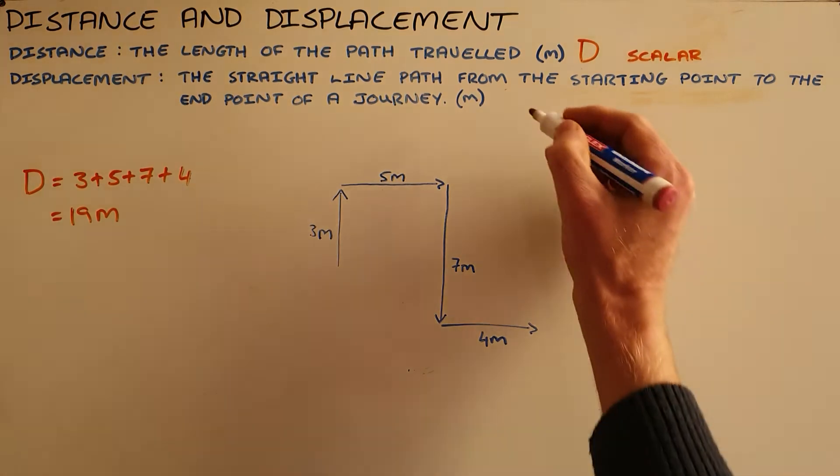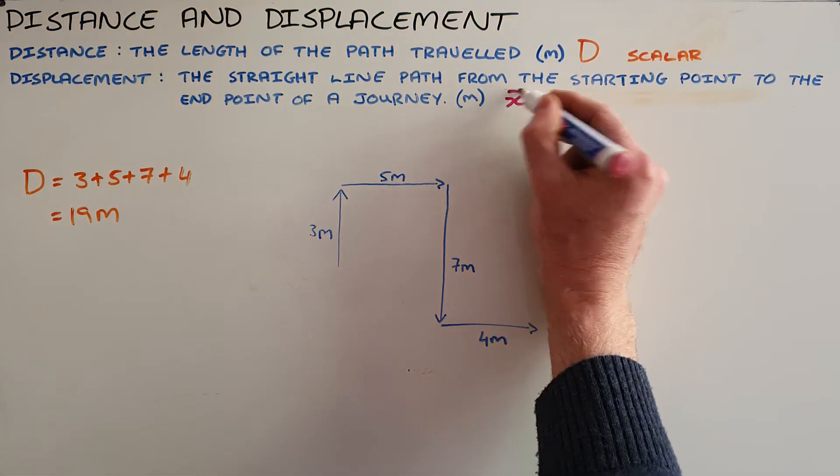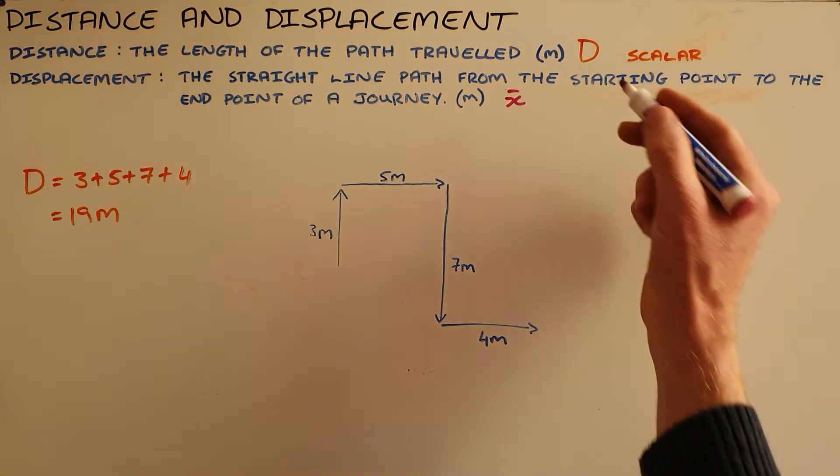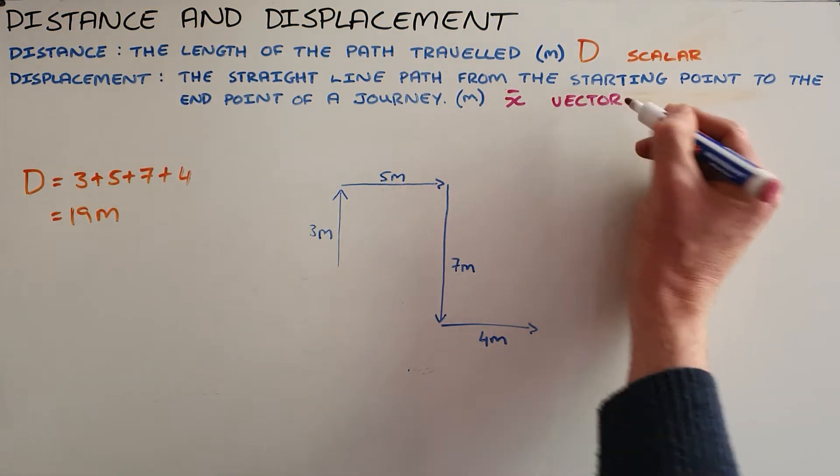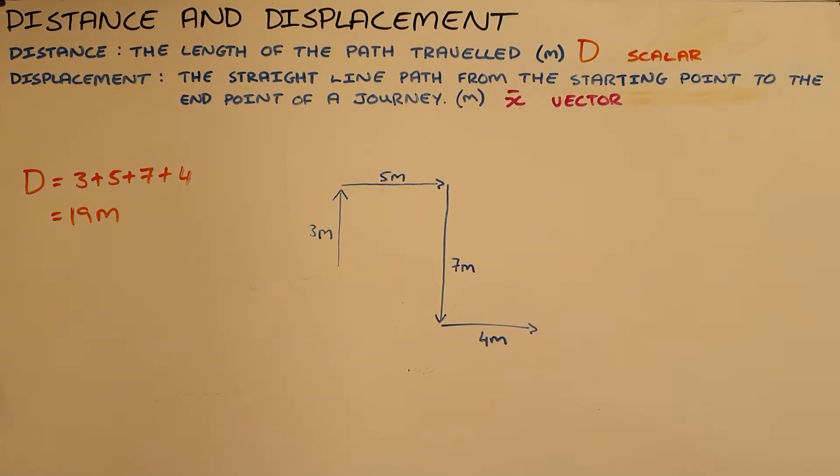Displacement, on the other hand, has the symbol x, often denoted with a line on it to remind us that it is a vector quantity. It is defined as the straight line from the starting point to the end point of a journey.